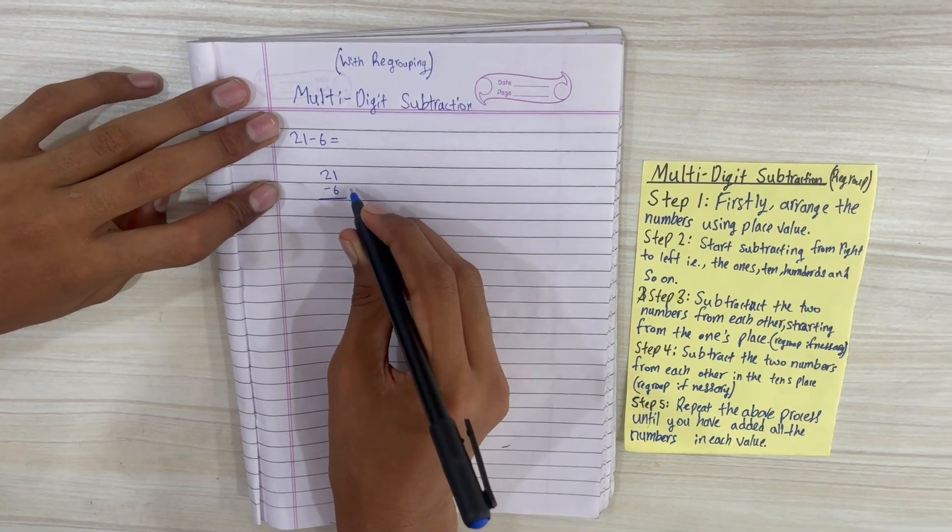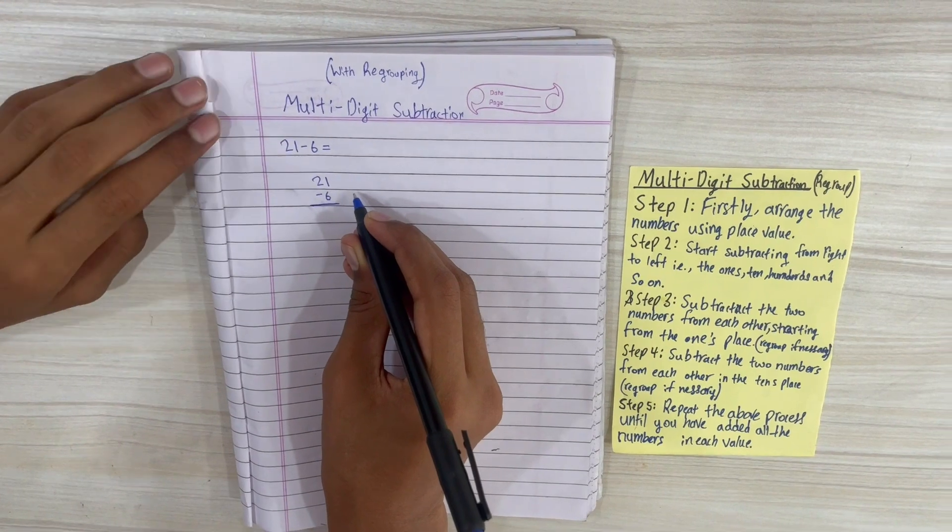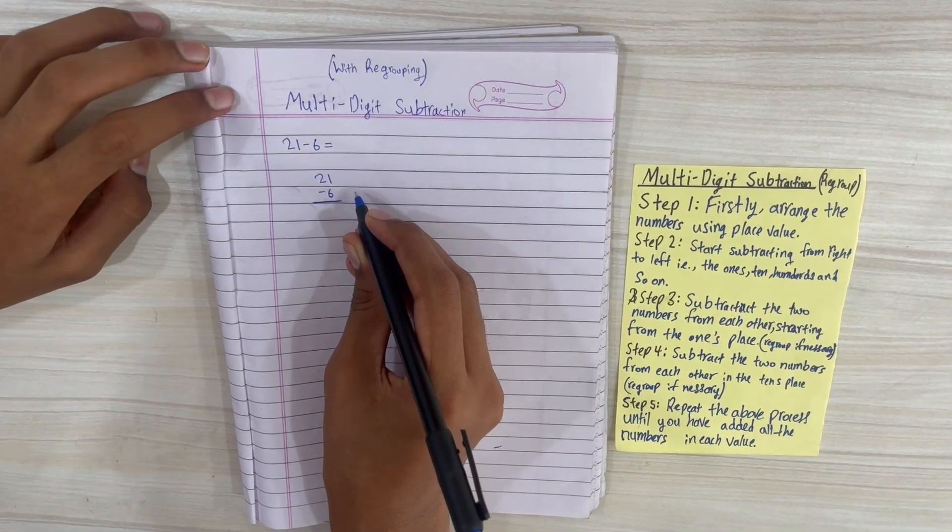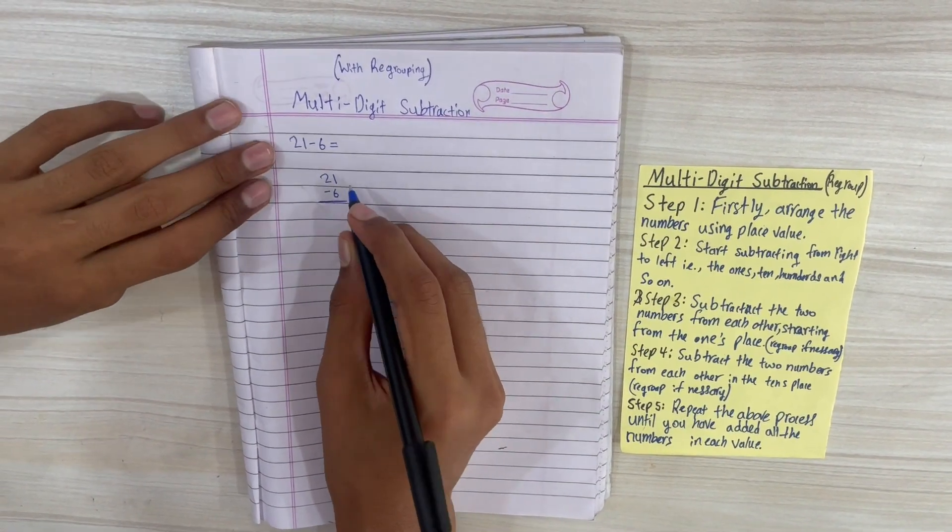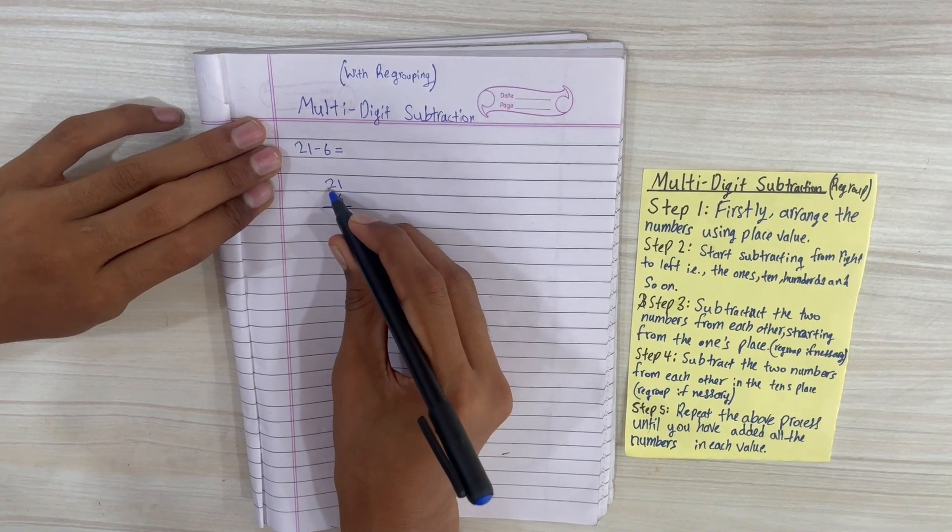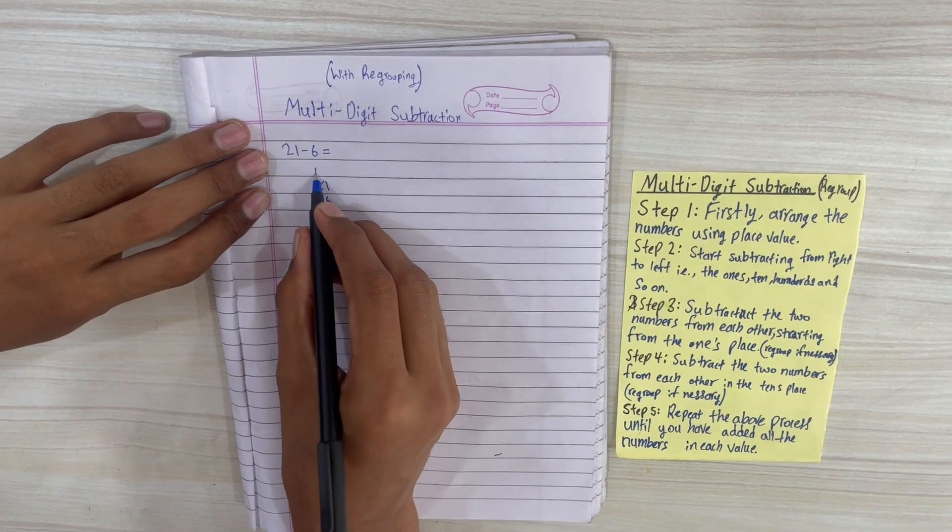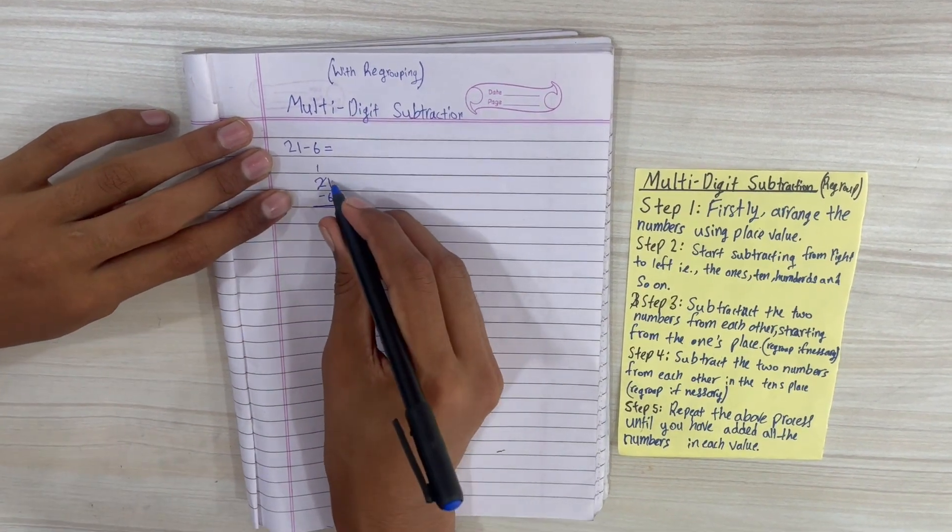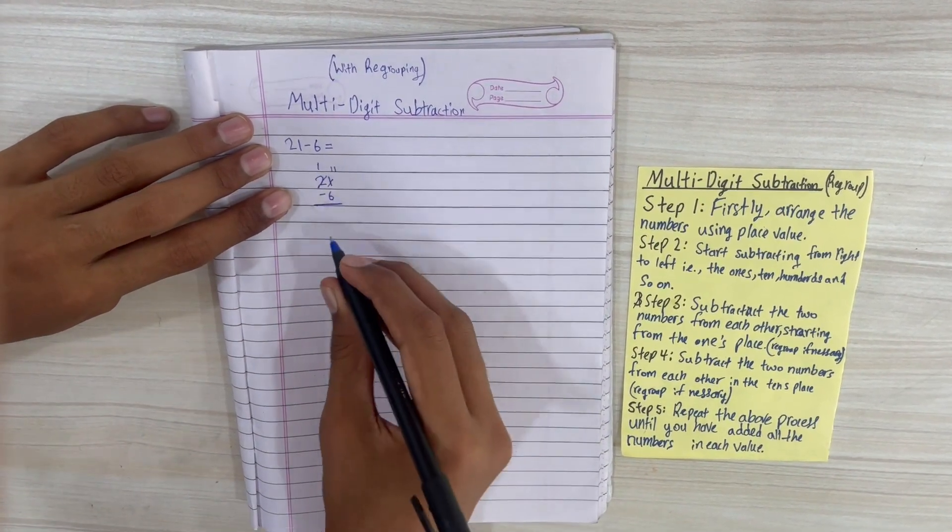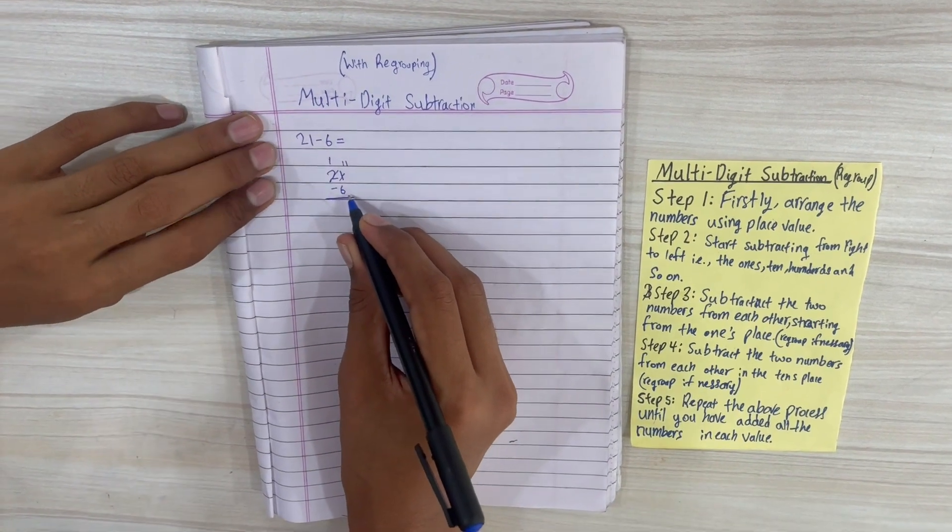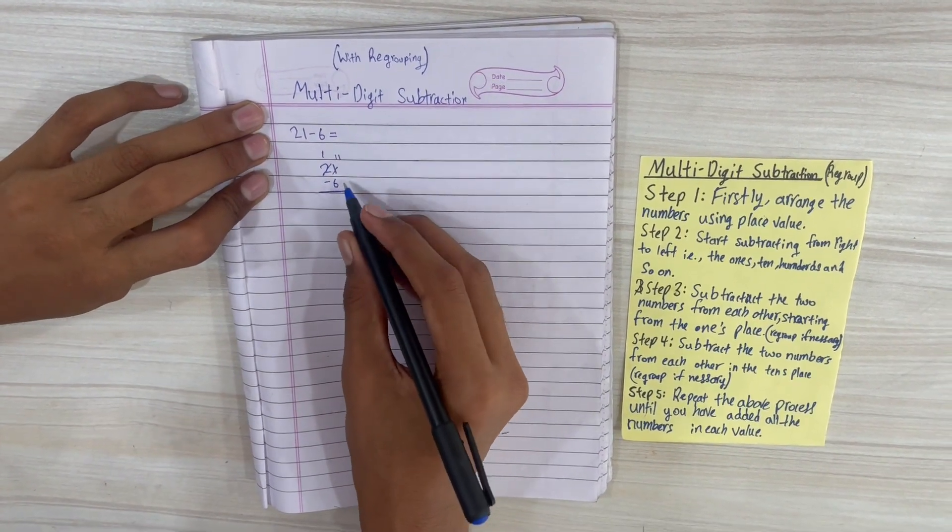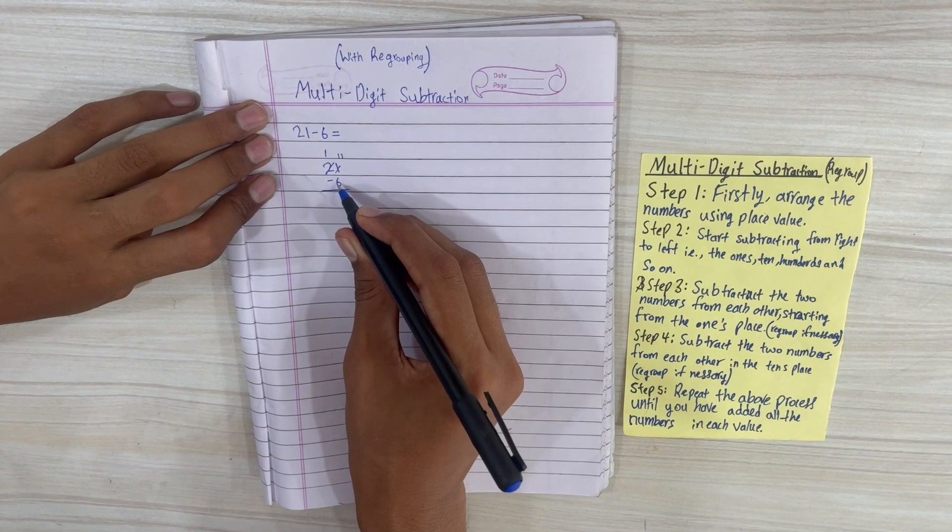So we will have to take a carry over, a digit from the back, another place which is 2. We're going to turn this into 1 and turn this into 11. So we will be subtracting 11 minus 6.